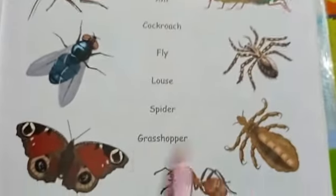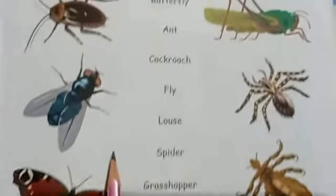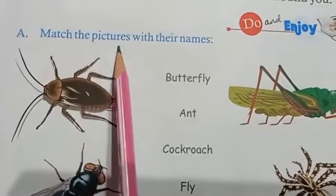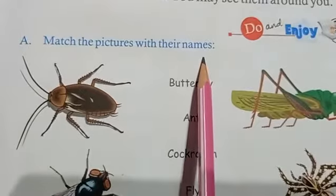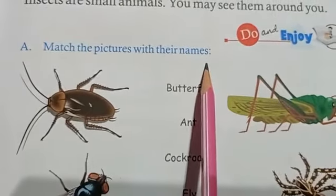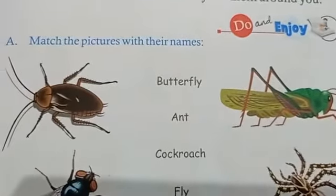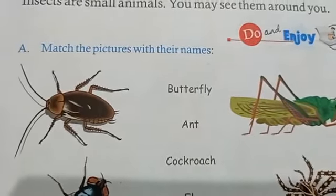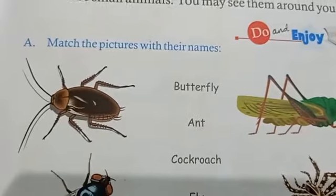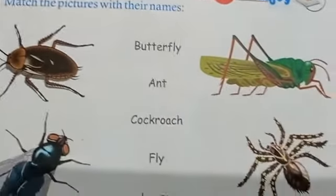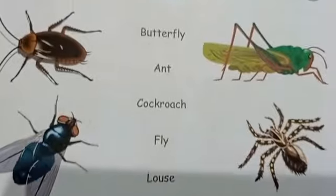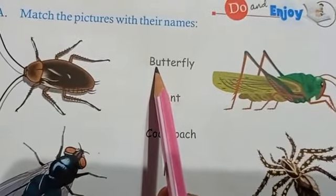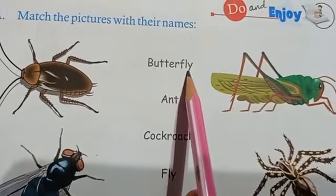Look at these — these are all insects. The question is: match the pictures with their names. There are many insects: mosquitoes, house fly, bed bug, butterfly, ladybird, cockroach, honeybee, and many more.